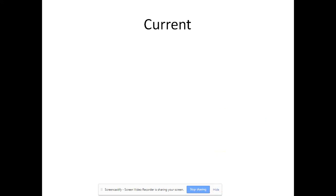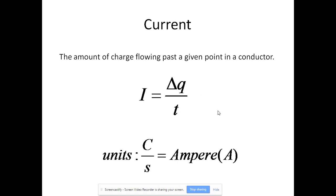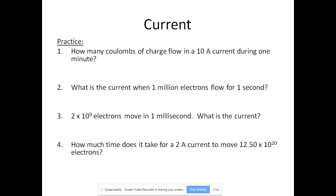Current is the amount of charge flowing past a given point in a conductor. Charge is Q, measured in coulombs. To get current, we take that charge and divide by time. Charge is in coulombs, time is in seconds — a coulomb per second is equal to the SI unit for current, which is the ampere, or amps. Using this equation, I'd like you to turn the sheet over and try the practice problems. Turn the video off, and then I'll go through the answers with you.